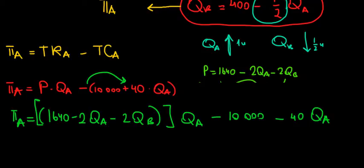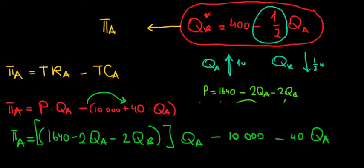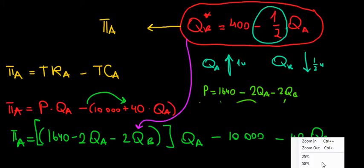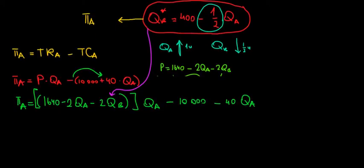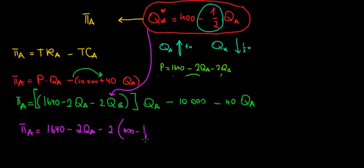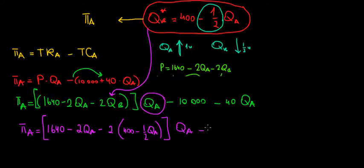We want to substitute the quantity of player B into the function. The reaction function of player B is QB = 400 minus one-half times QA. Substituting, profit of player A equals (1640 minus 2QA minus 2 times (400 minus ½QA)) times QA, minus 10,000, minus 40QA.